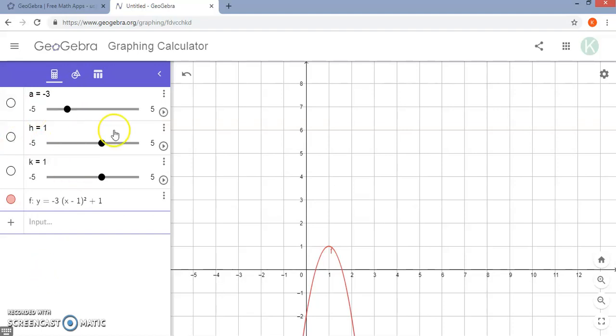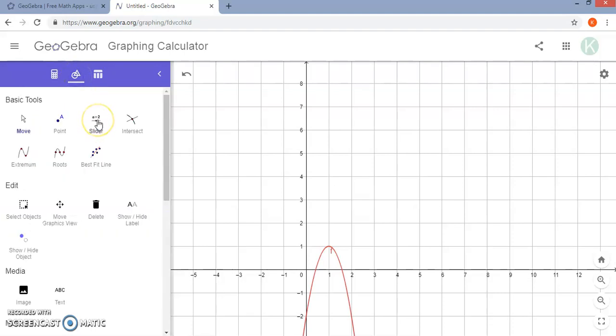You can click on the values and change what intervals you want the slider values to go between. So maybe you want them to only explore positive values, negative values, maybe only fractions. You can change those appropriately. There's also an option to add a slider if you go under tools.